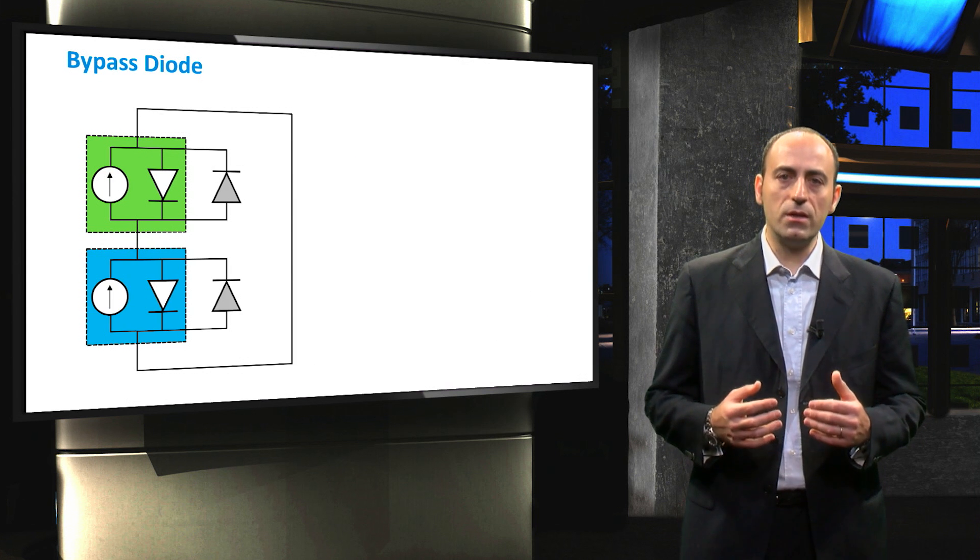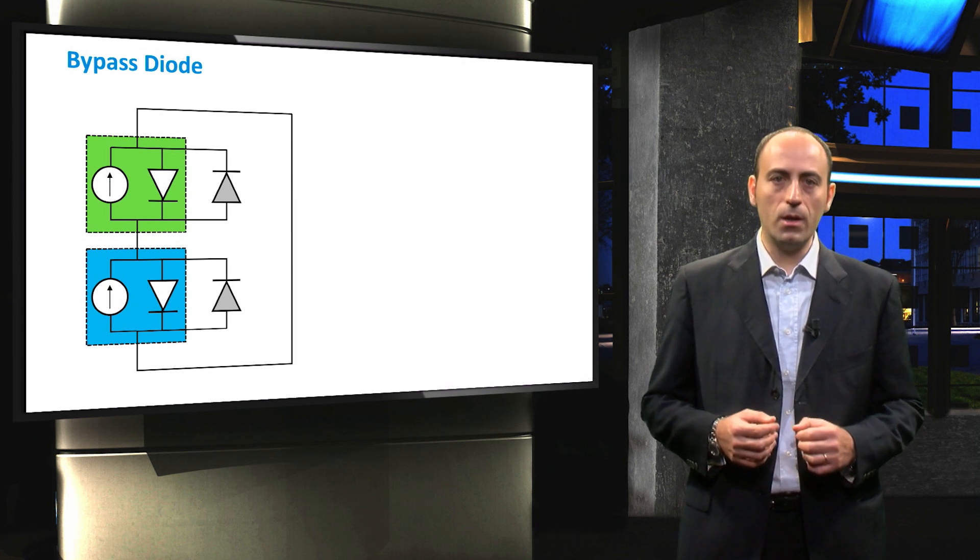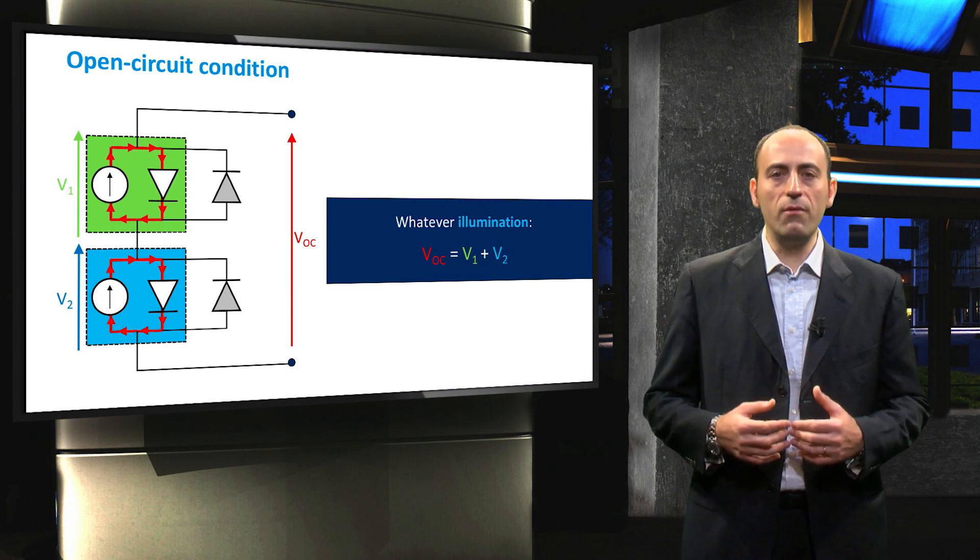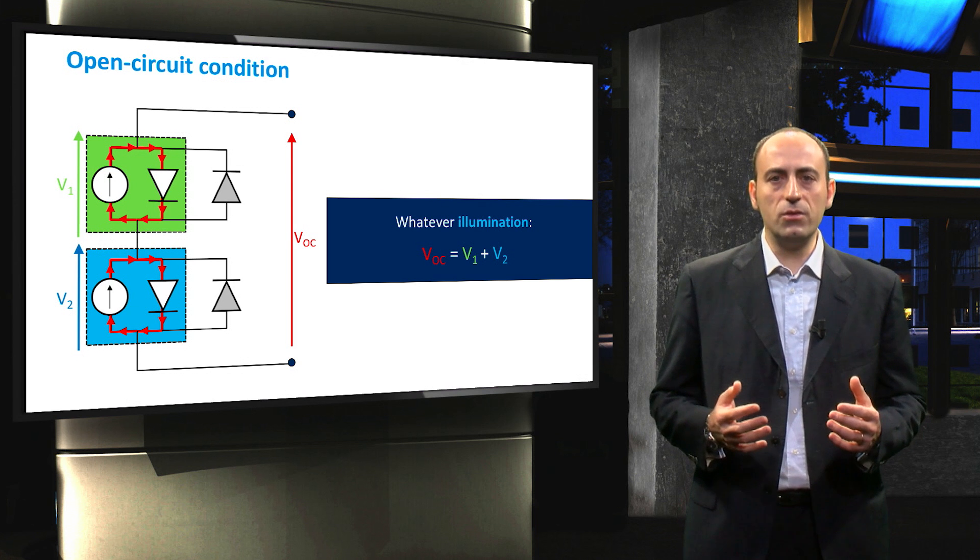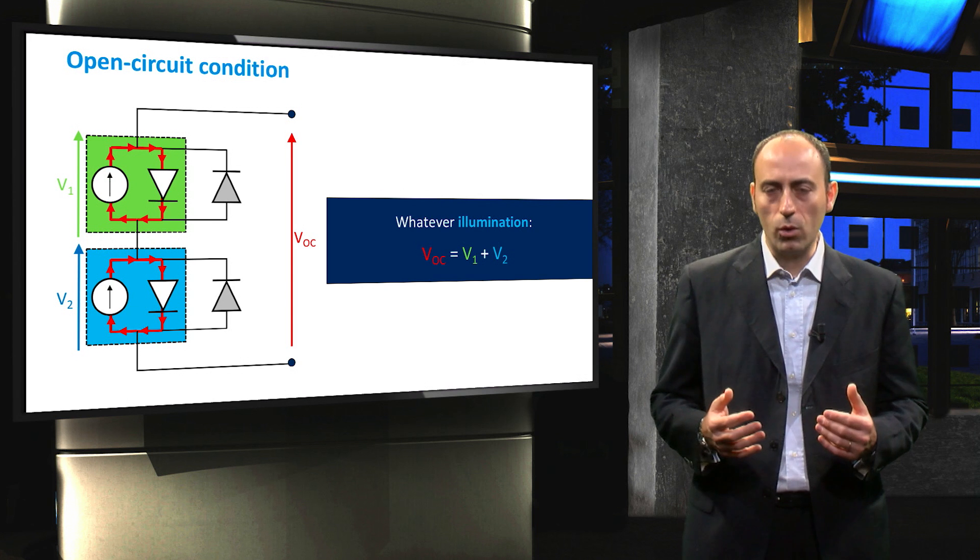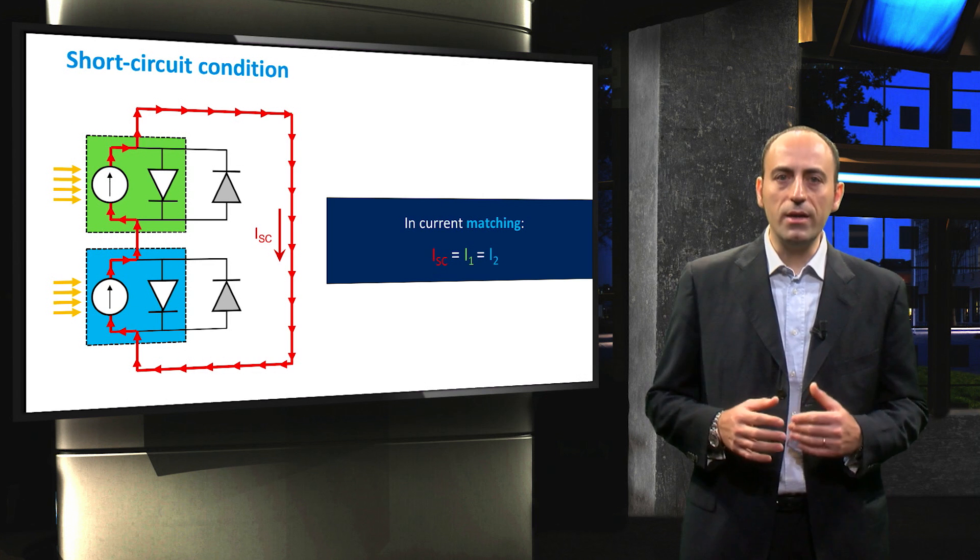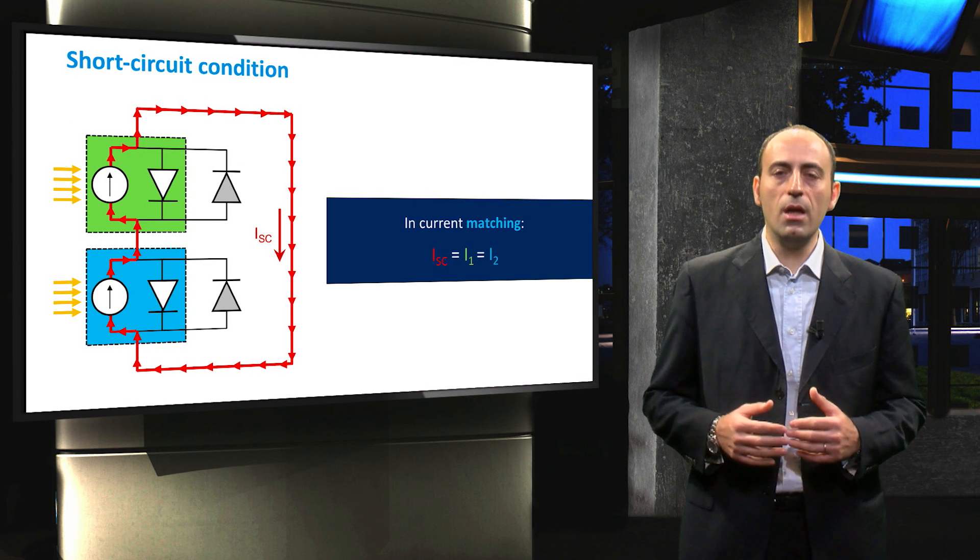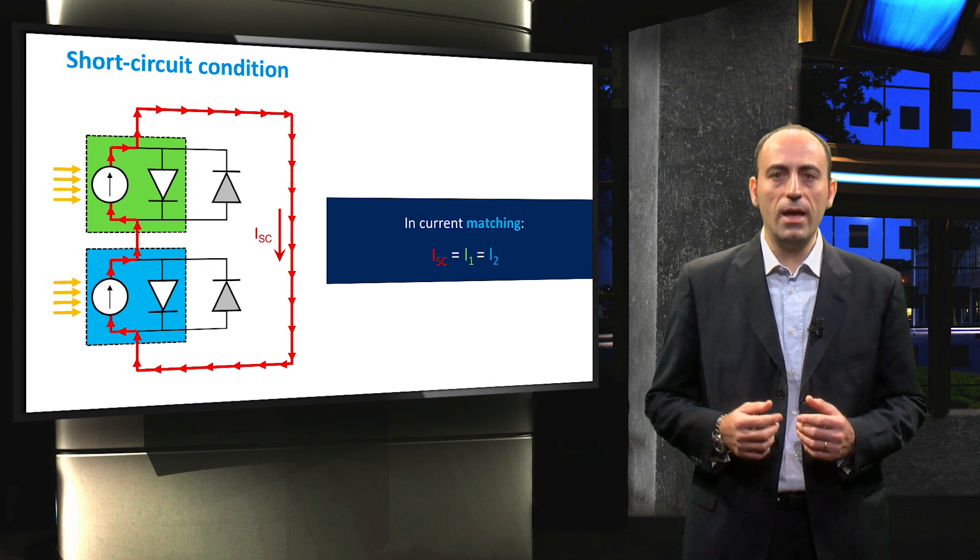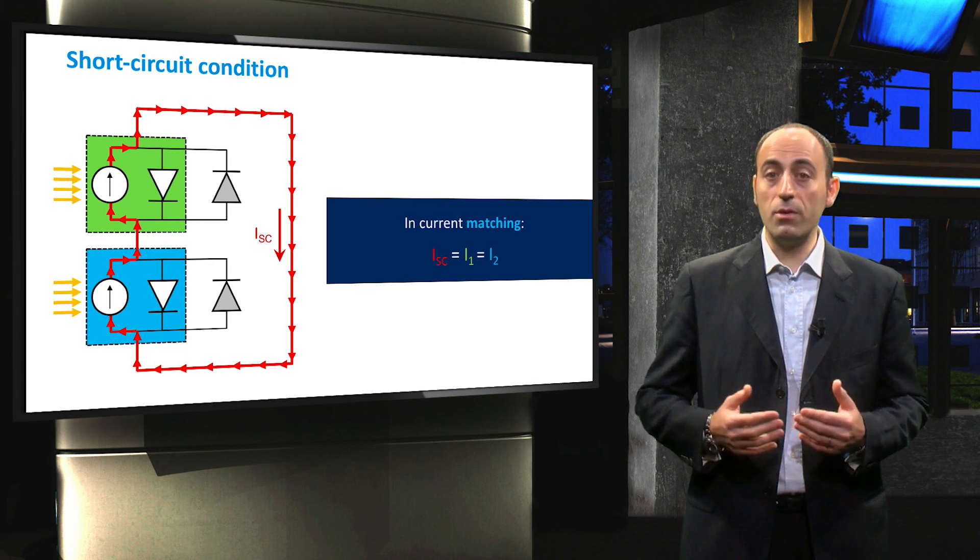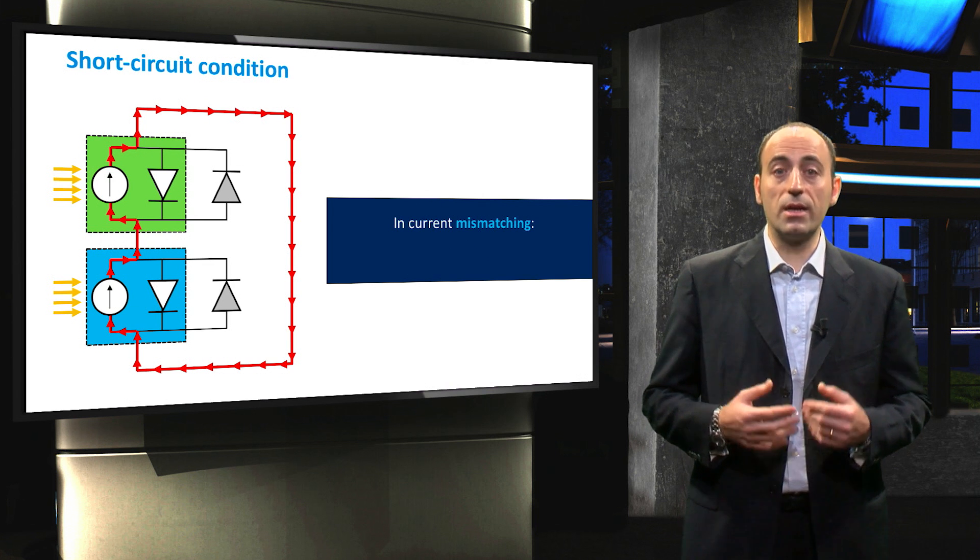Let's now place two solar cells in series and investigate their behavior more in detail. In case of open circuit, whatever is the illumination condition on each cell, the two devices would not be connected to any load and we would just see the sum of the two voltages. When we short circuit the two solar cells and we are in a current matching situation, then both cells are delivering the same amount of current as depicted by the red arrows and the bypass diodes are inactive, being reverse biased.